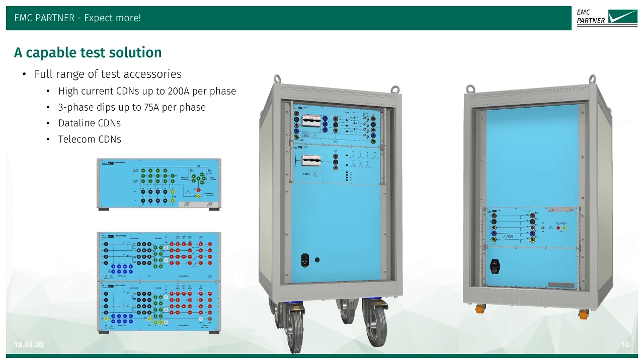In addition to the power main accessories, we have CDNs for data line, for asymmetrical data line coupling, and for symmetrical data line coupling. We have CDN-UTP8, which can be used for testing on data lines up to 1 Gigabit per second.